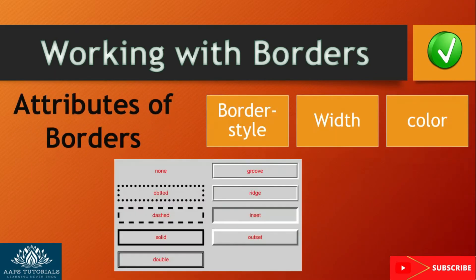Border style: while working with border style, we can set different values like dotted, dashed, solid, and round types of borders. The border style property has one of four values: top border, bottom border, right border, and left border. The border style provides dotted, dashed, inset, outset, groove, double, and ridge properties which affect the border's display.